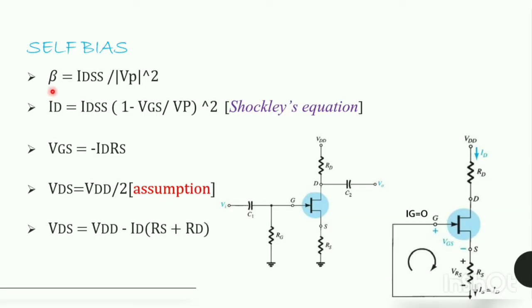In FET, our beta value is determined as IDSS by modulus of VP the whole square. Next is the famous Shockley's equation. That is, ID equals IDSS times 1 minus VGS by VP the whole square.